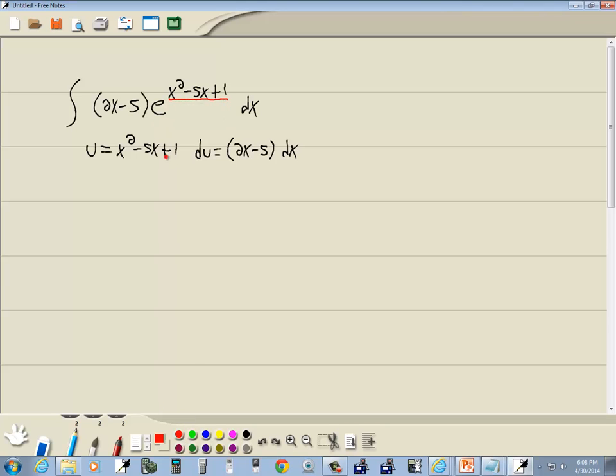Well, x squared minus 5x plus 1 matches that, so that's going to be replaced by u. 2x minus 5 dx, those get replaced by du.